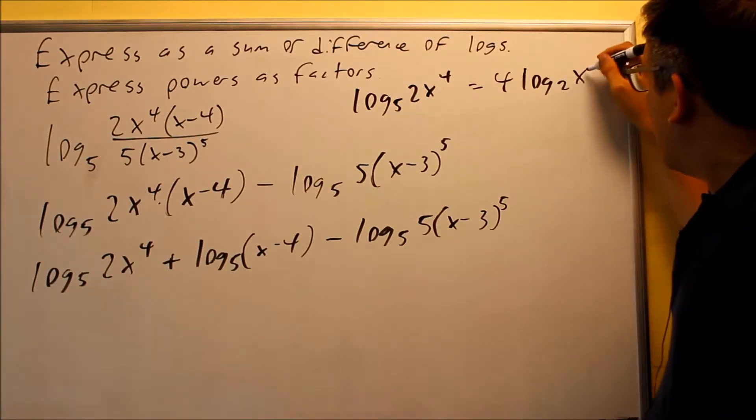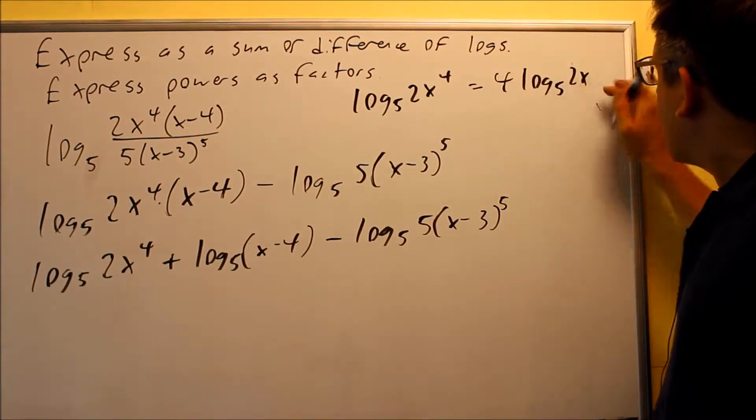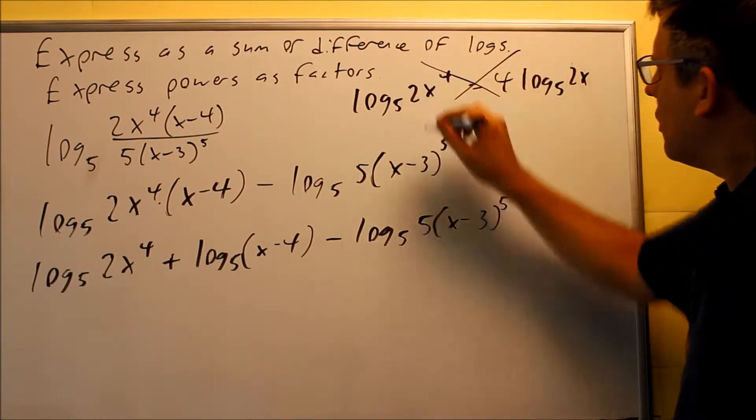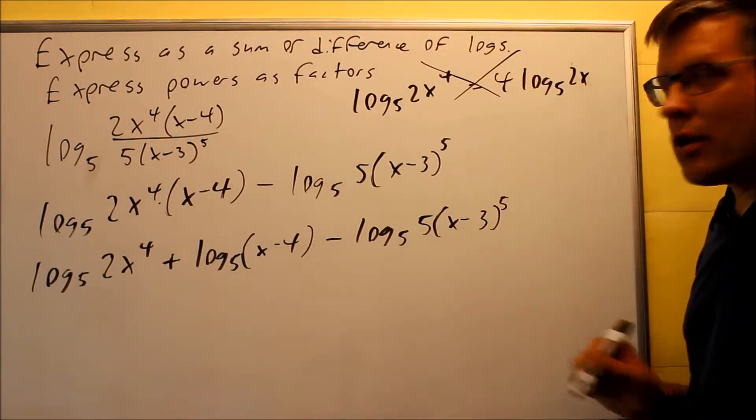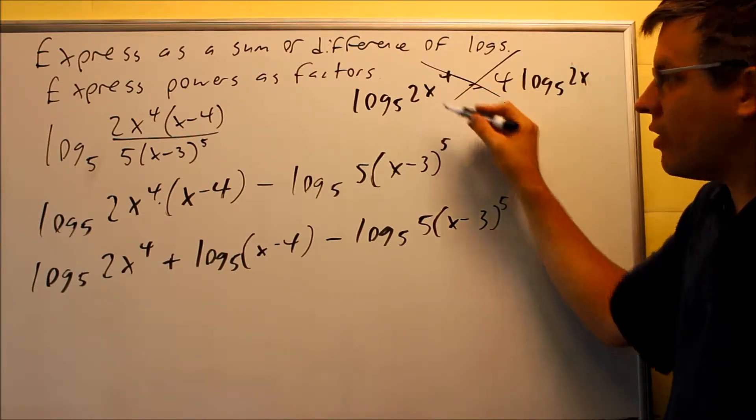So 4 log base 5 of 2x. This is actually incorrect. The reason why is because the 4 only applies to the x. It doesn't apply to the whole thing.